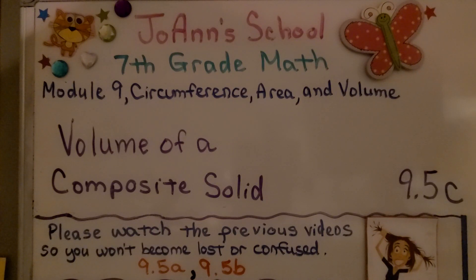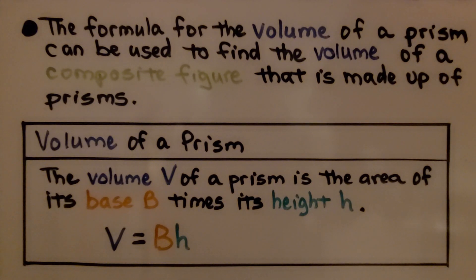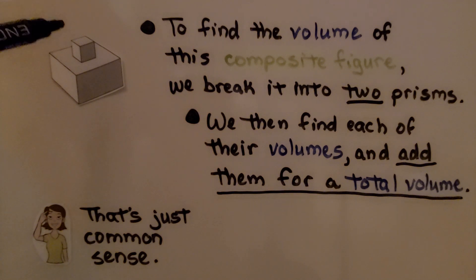Lesson 9.5c: Volume of a Composite Solid. The formula for the volume of a prism can be used to find the volume of a composite figure that is made up of prisms. We're going to use volume equals base area times height. To find the volume of a composite figure, we break it into two prisms, then find their volumes and add them for a total volume.